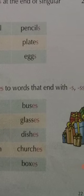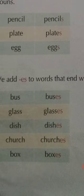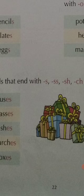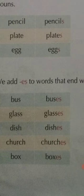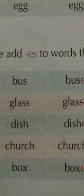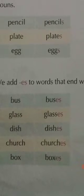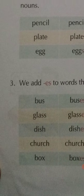Rule number three: we add ES to words that end with S, SS, SH, CH, and X. For example: bus–buses (ends in S), SS ending gives dishes, CH ending gives churches, box–foxes (ends in X), match–matches (ends in CH), bush–bushes and brush–brushes (end in SH). There are many words where we use ES.